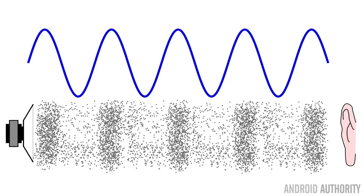So first let's look at some basics. We live in an analog world. We hear sounds through sound waves that travel through the air and then hit our eardrum, and our brain interprets them as particular types of sounds. That's an analog way.